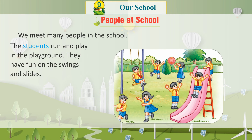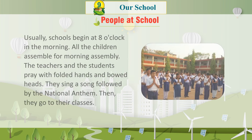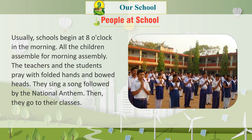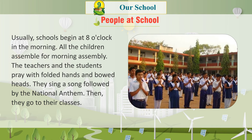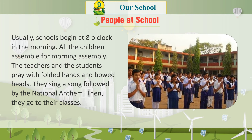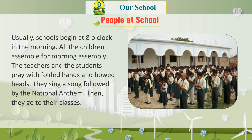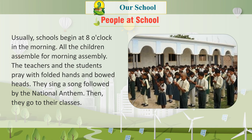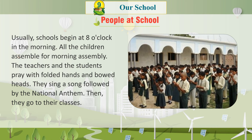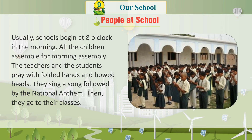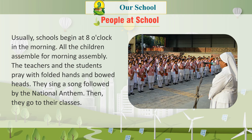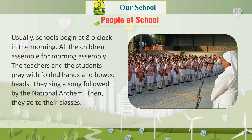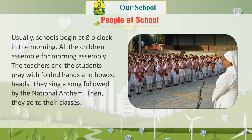The students run and play in the playground. They have fun on the swings and slides. Usually, schools begin at 8 o'clock in the morning. All the children assemble for morning assembly. The teachers and the students pray with folded hands and bowed heads. They sing a song followed by the national anthem, then go to their classes.